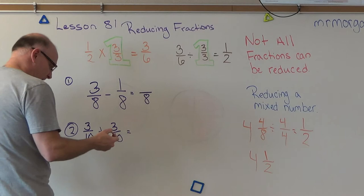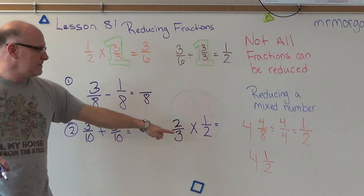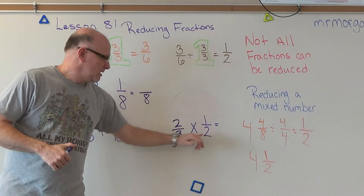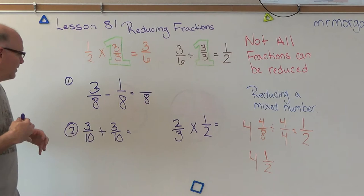For our final one: 2/3 times 1/2. Now multiplication, you're multiplying both numbers all the way across. Get your answer and then reduce it. Are there any questions? Everybody understand your homework? One, two, three problems and that's all we got.